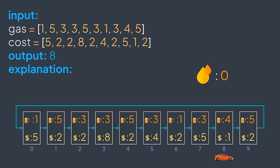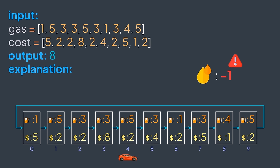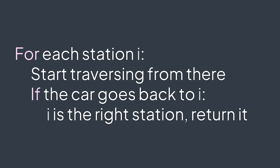This is not the case for all stations. For example, starting from station 1: add 5, pay 2; add 3, pay 2; add 3 — then we pay 8 to move to the next station, the amount of gas becomes negative. This means we can't continue — station 1 is not the right one. A brute force solution is to simulate what happens with every station, and if we find one that respects the condition, return its index.